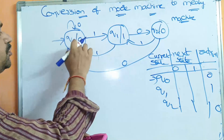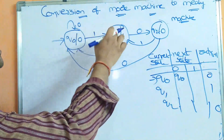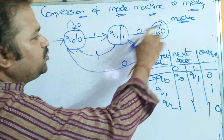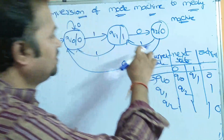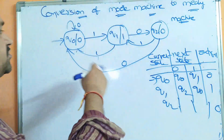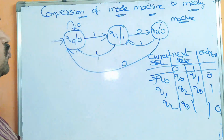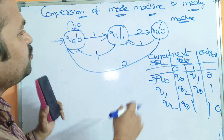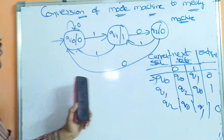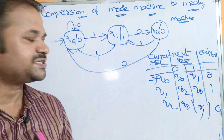Q0 on input 0 goes to Q0. Q0 on input 1 goes to Q1. Q1 on input 0 goes to Q0. Q2 on input 1 goes to Q1. Q2 on input 0 goes to Q0, and Q2 on input 1 goes to Q1. Now let us construct the Mealy machine.